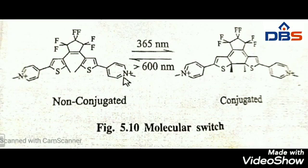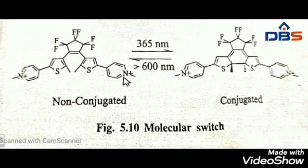First one is switching devices. An electrical switch is used for regulating electron flow. Certain supramolecular mimics of this electric switch are called molecular switches.